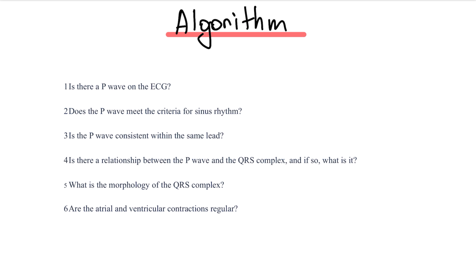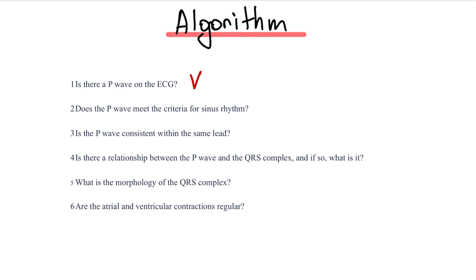But first, let me remind you several questions you need to ask to determine the rhythm. Is there a p-wave on the ECG? Does the p-wave meet the criteria for sinus rhythm? Is the p-wave consistent within the same lead? Is there a relationship between the p-wave and the QRS complex, and if so, what is it? What is the morphology of the QRS complex? Are the atrial and ventricular contractions regular?